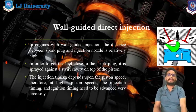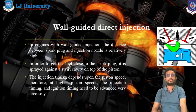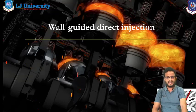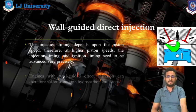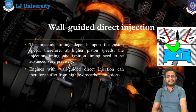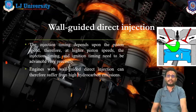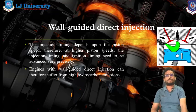The injection timing in the wall guided system depends upon piston speed, injection advance or retard timing, spark plug location, injector location, and the type of nozzle used. In the wall guided system, the injection timing depends on piston speed and advance timing respectively. Note that engines with the wall guided system can suffer from high hydrocarbon emissions — this system produces more hydrocarbons compared to spray guided and air guided systems.